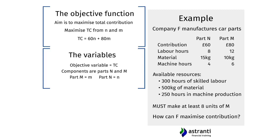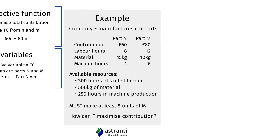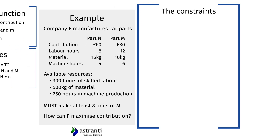It would be nice to lay everything out in a very systematic way, and that's the next part of setting up the mathematical model in linear programming. These equations are known as the constraints — they constrain, restrict, and limit the different output combinations we can manufacture.